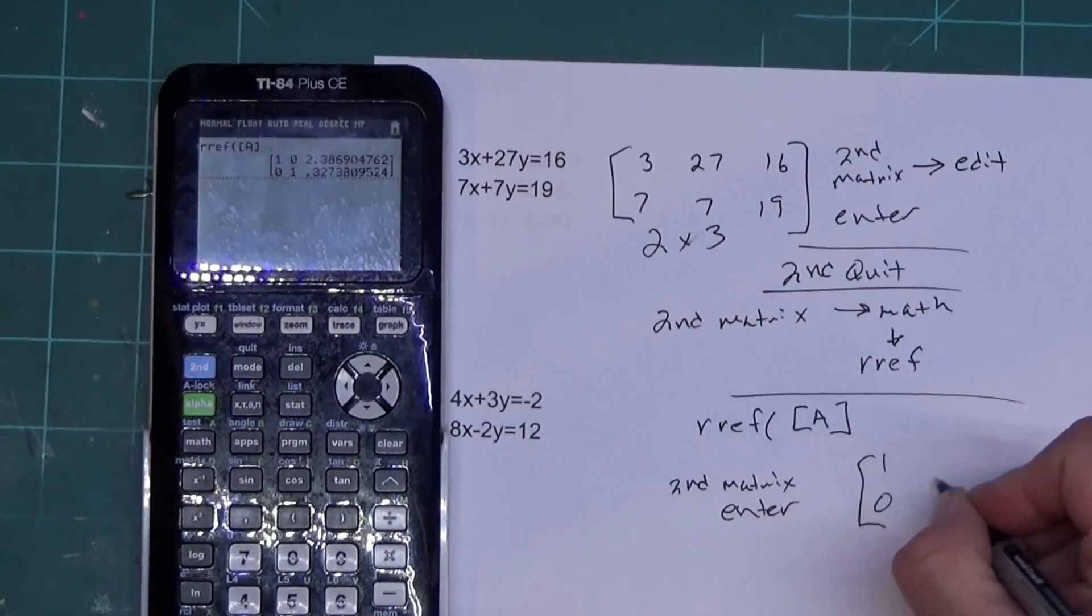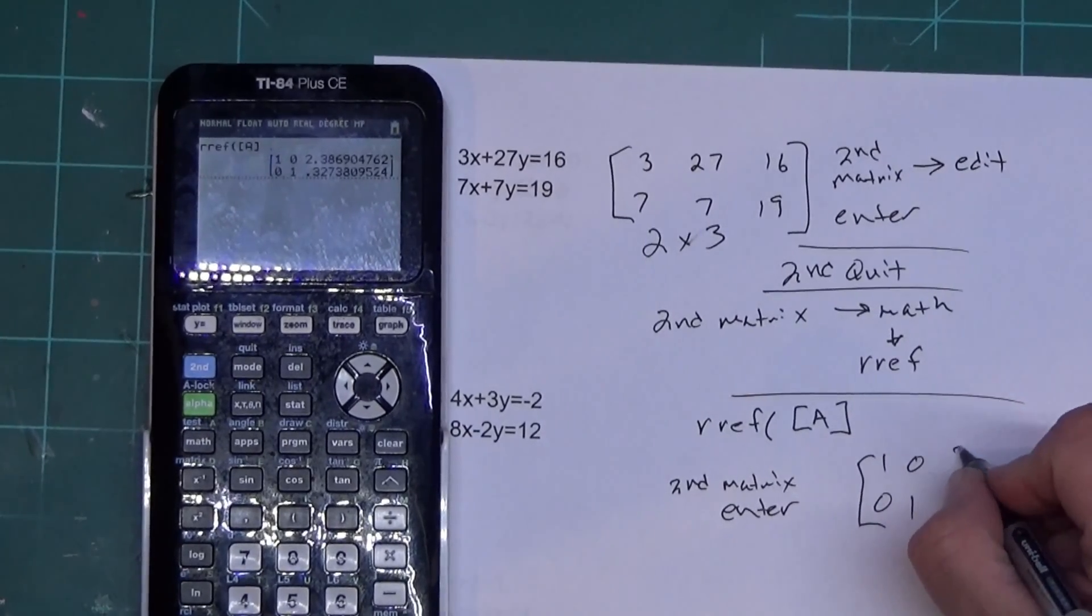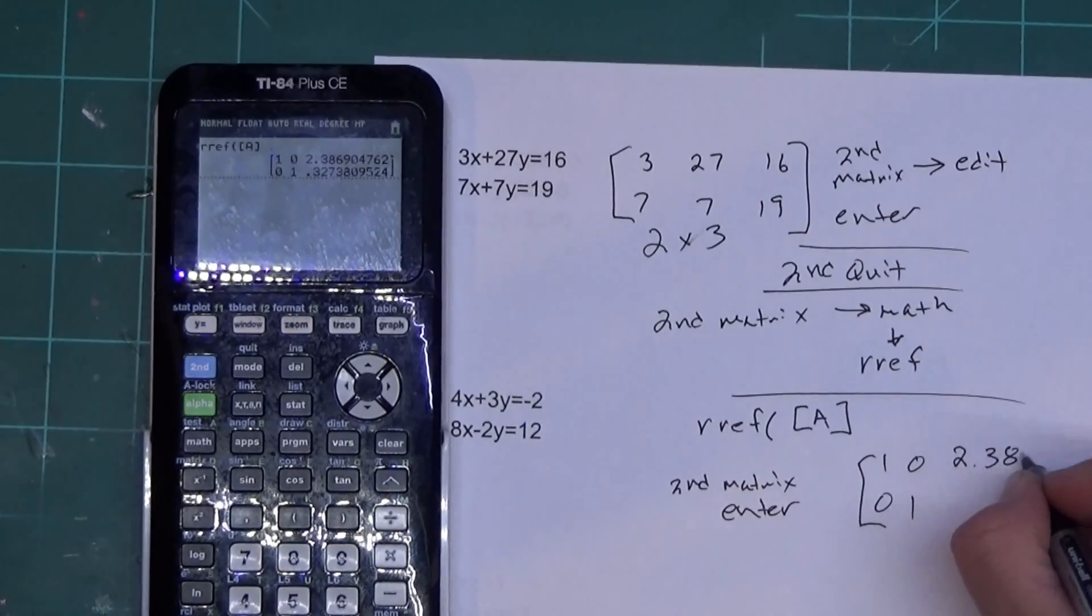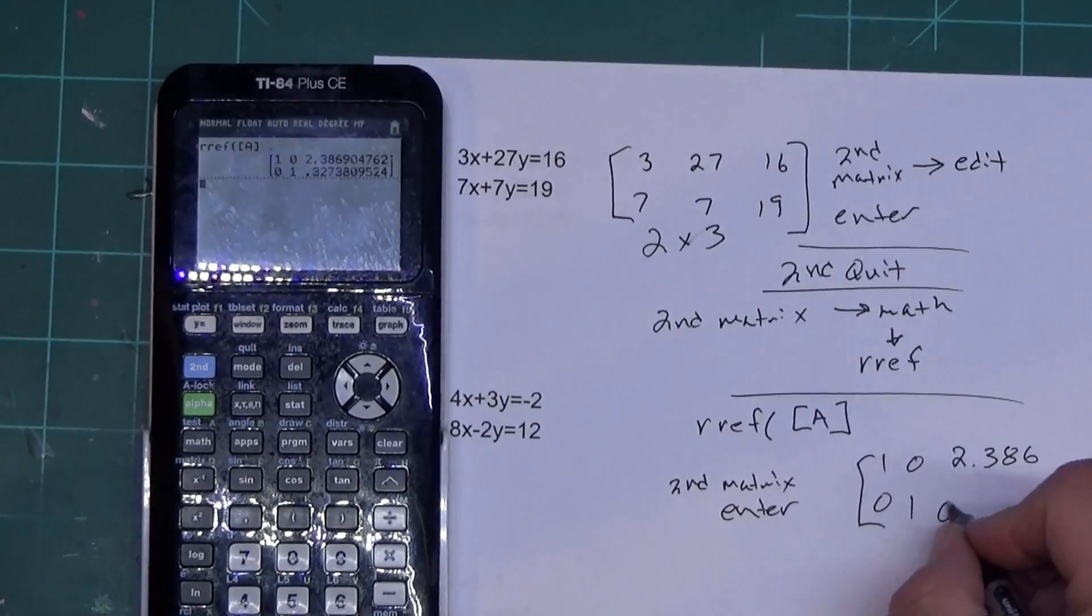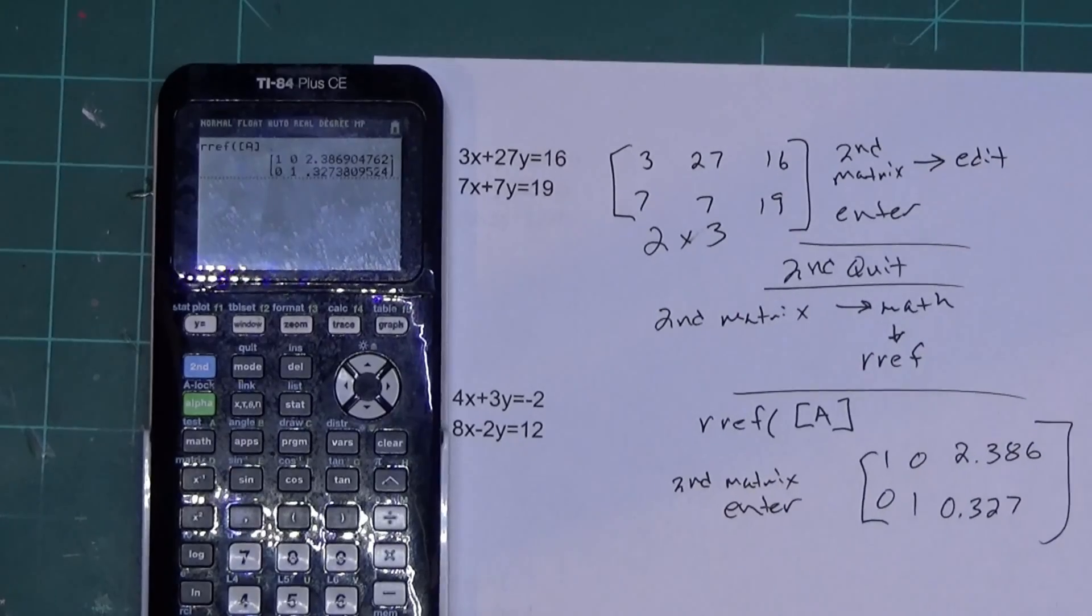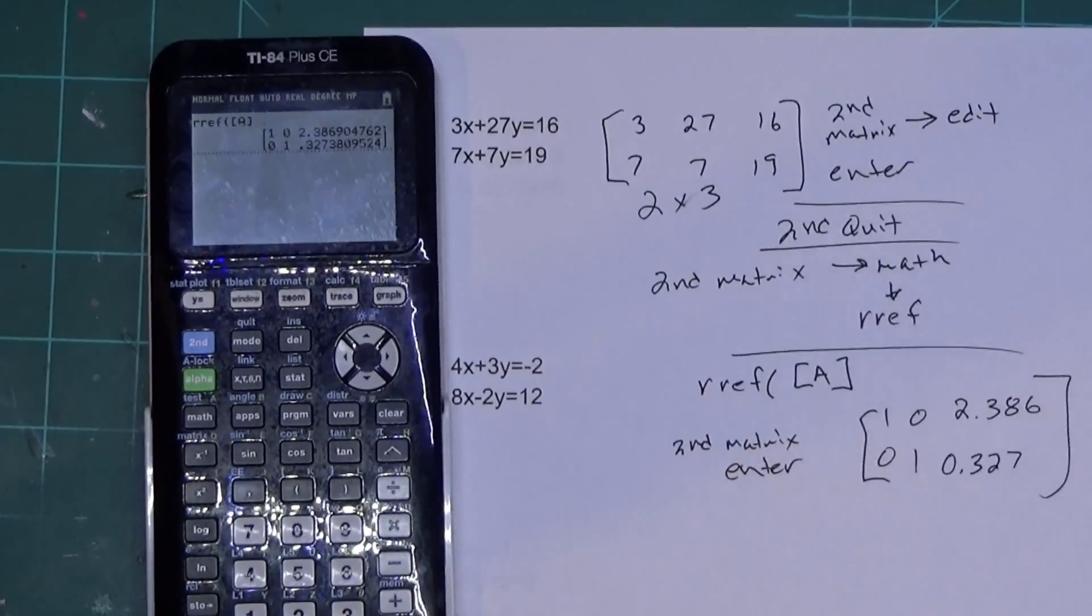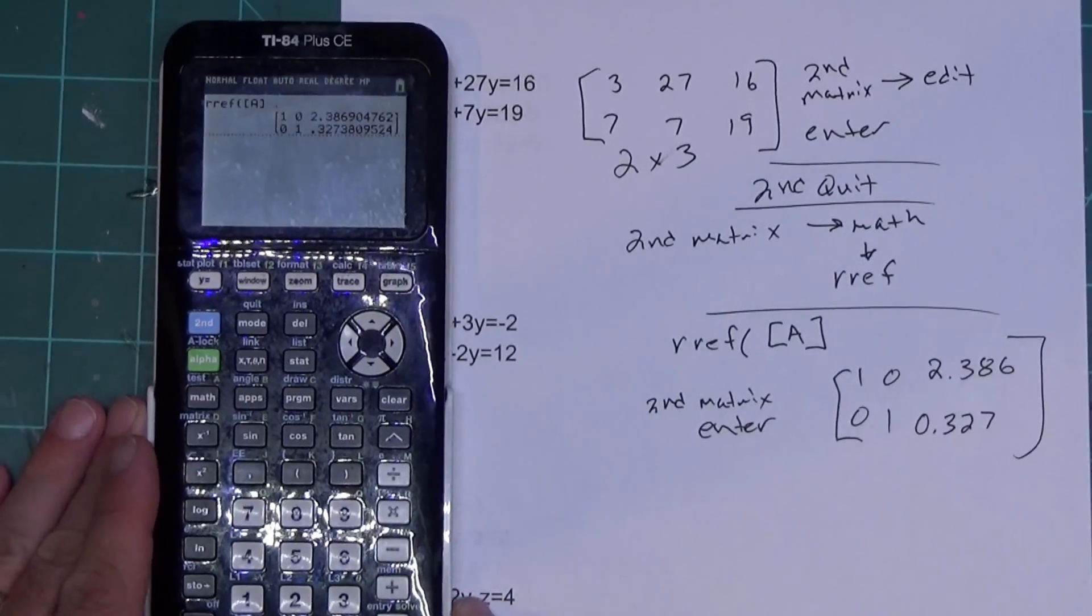It tells you 1, 0, 0, 1. We've got some ugly decimals because this one has some ugly decimals. I thought that would be fun. Because I don't want the ugly decimals, so how do I get rid of them?